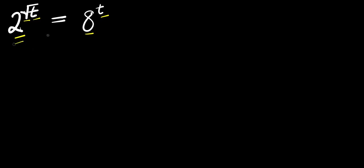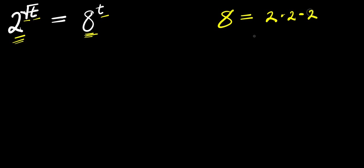If you observe, the two bases here are different. So the first step is to ensure that we make the two bases to be the same. To achieve this, I need to express 8 in terms of 2. So 8 is 2 times 2 times 2, and this is 2 to the power of 3.